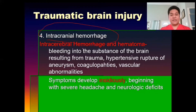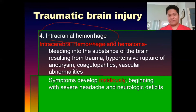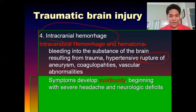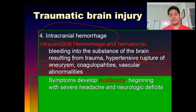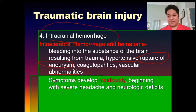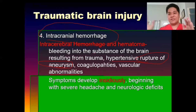Intracranial hemorrhage is bleeding into the substance of the brain resulting from trauma. There is a rupture of the blood vessels, coagulopathies, vascular abnormalities, or aneurysm to the brain tissue. If you have an aneurysm, the symptoms will develop insidiously — slowly — and then you will lose consciousness. Unlike with DAI, where you automatically lose consciousness or have a seizure and lose consciousness.